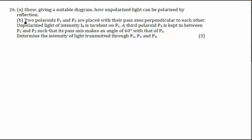Second part says two polaroids P1 and P2 are placed with their pass axis perpendicular to each other. That means two polaroids are maintaining at an angle of 90 degrees with each other, that is P1 and P2. And then it is saying we throw unpolarized light of intensity I0, that is incident on the first polaroid P1.